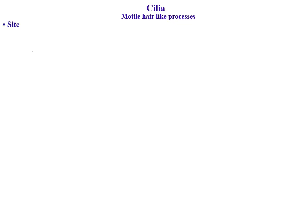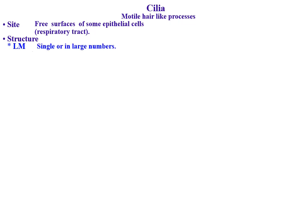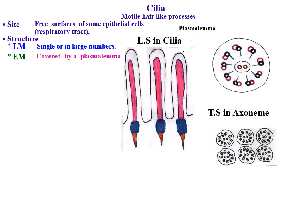Cilia are motile hair-like processes. Site: cilia are present on the free surfaces of some epithelial cells, as in the respiratory tract. By light microscope, cilia may be single or occur in large numbers and are readily demonstrated in hematoxylin and eosin preparations. By electron microscope, cilia are covered by a plasma membrane and consist of an axoneme or shaft, a basal body, and a rootlet.